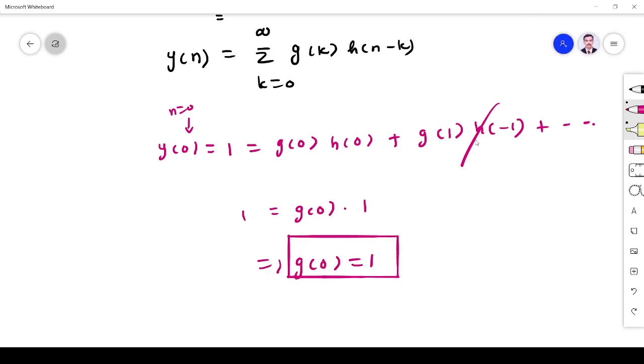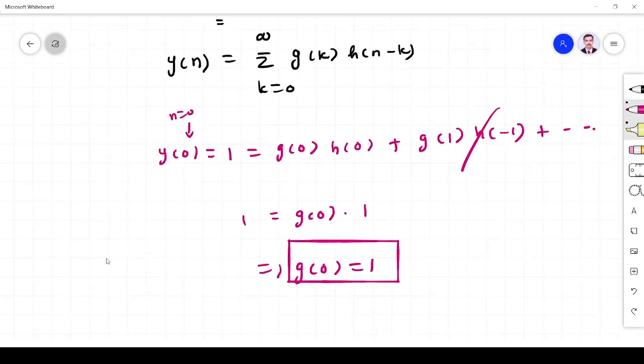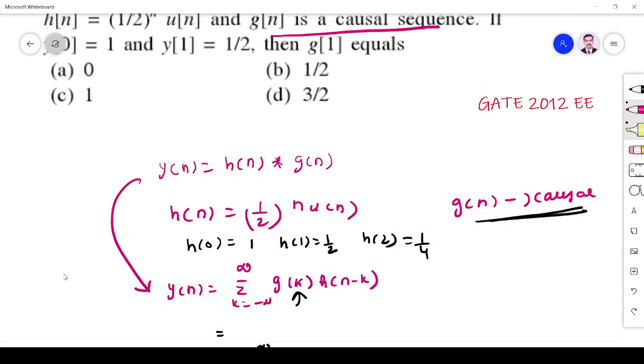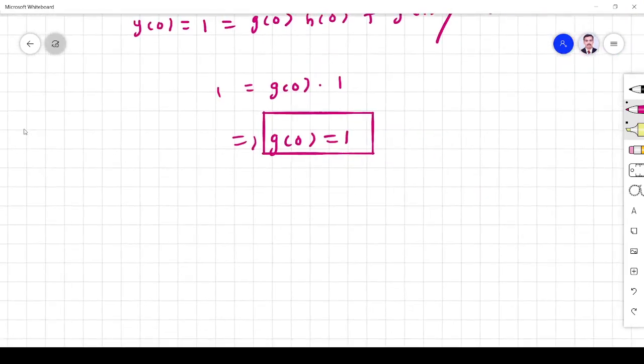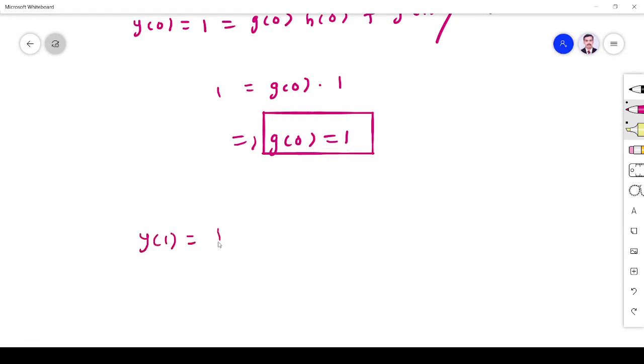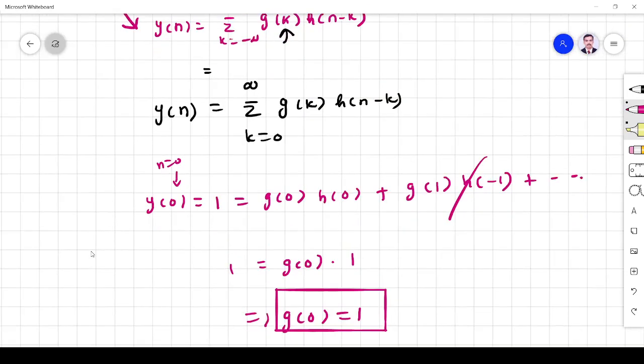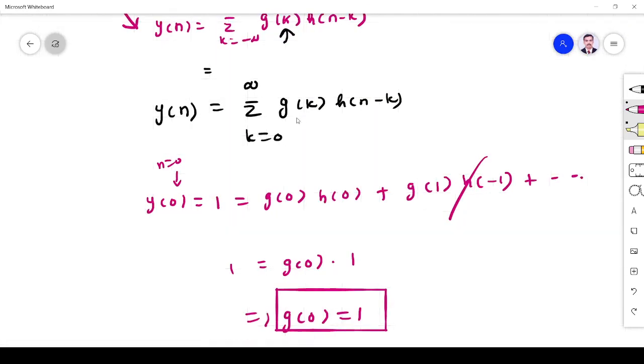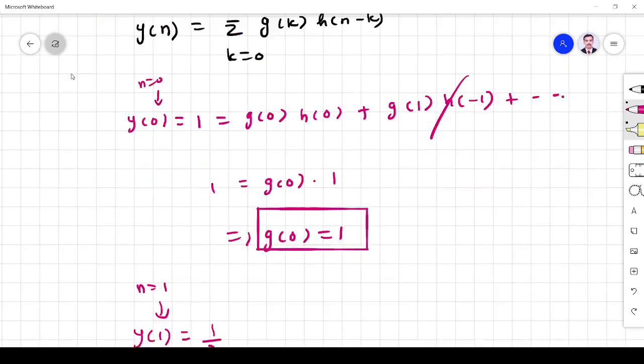Next to the argument y equals 2. y 1 is 1/2. y 1 is 1/2. That is n is equal to 1. So n is equal to 1 and substitute. The formula is k equals 0, g 0, n equals 1. So h 1.